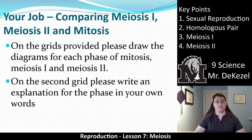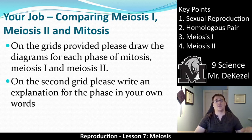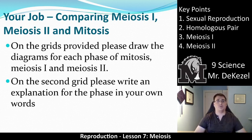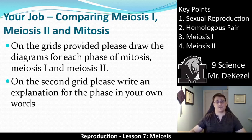What I'd like you to do now is, on the grids provided in your booklet, draw the diagrams for each phase of mitosis, meiosis 1 and meiosis 2. And on the second grid, write an explanation for each phase in your own words — something easy for you to remember. Highlight keywords. If you have any questions, please let me know, and thanks very much for watching.